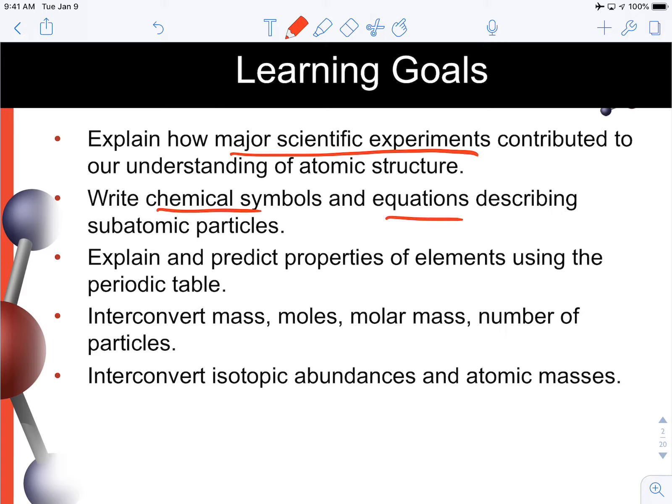You need to start learning how to write chemical notations, so looking at chemical symbols and equations. We'll start to get a feel for properties of the elements and understanding the arrangement of the periodic table. A lot of you that had chemistry in high school will be familiar with a lot of this.